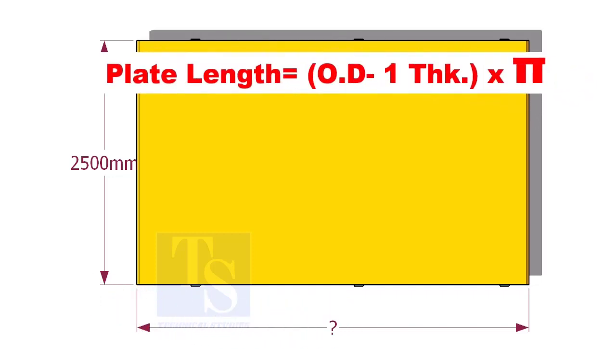To calculate the length, subtract 1 thickness of the pipe from the OD and multiply with the value of pi.